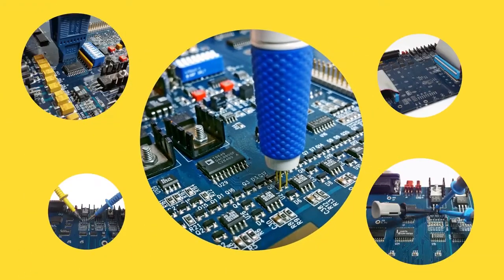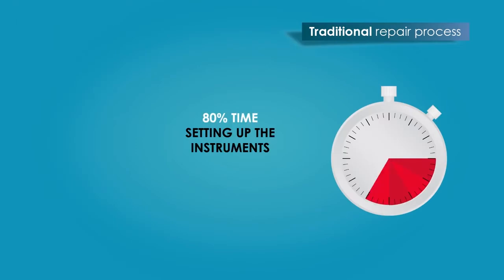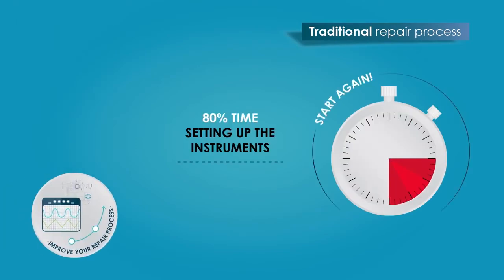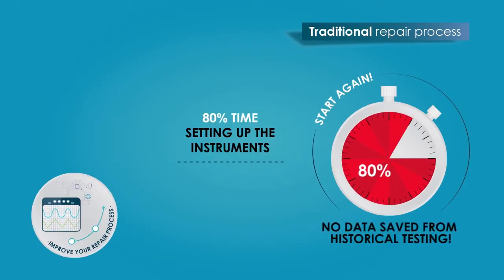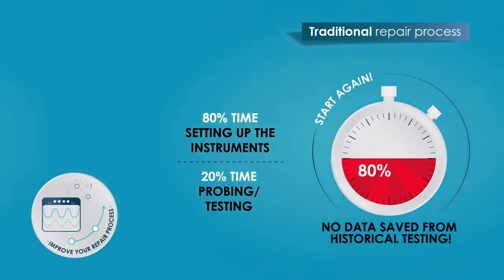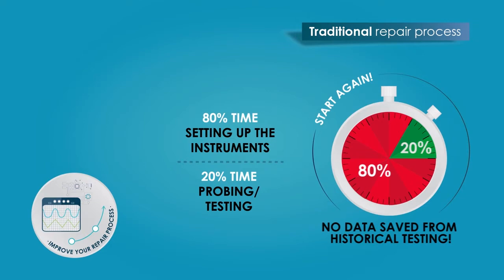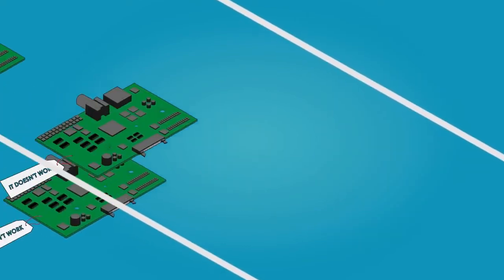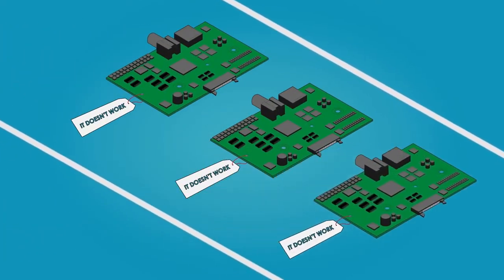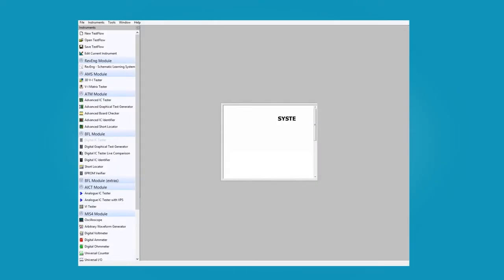Now let's think about your existing troubleshooting process. Repair engineers generally spend 80% of their time setting up the different testing instruments and only 20% actually testing and troubleshooting the PCB. This cycle happens every time a board comes in for repair. It's time to put to one side all those slow and inefficient fault-finding operations.